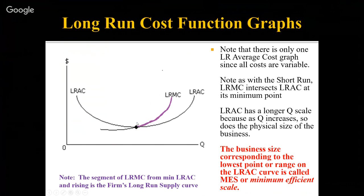The size associated with the minimum point has a special name: MES, which stands for minimum efficient scale. This represents an ideal size. The average cost to produce one unit of output is as low as possible at whatever size contains the minimum. Sizes that are smaller have higher average total cost — larger per-unit costs of production. And sizes that are bigger also have higher per-unit costs of production.